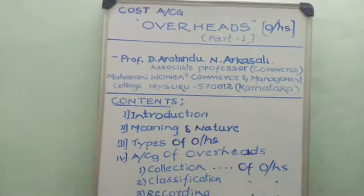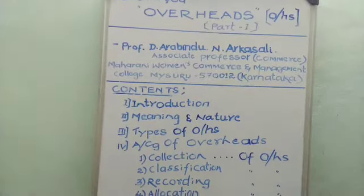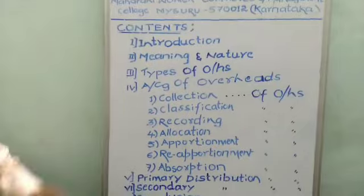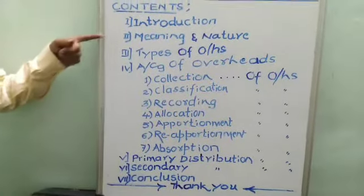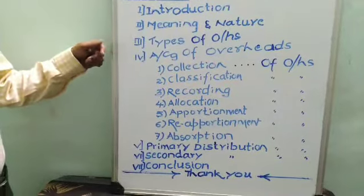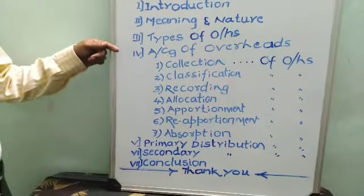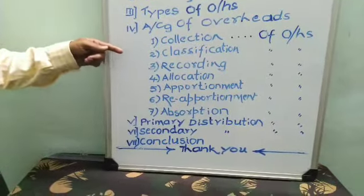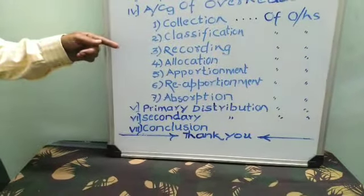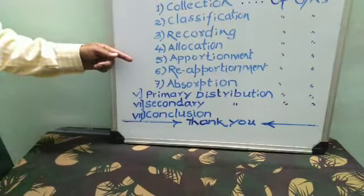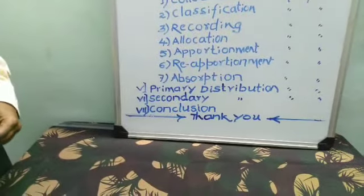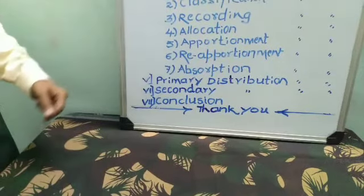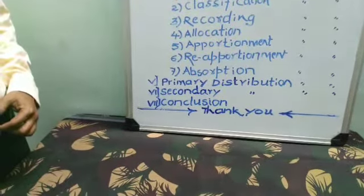Overhead includes the following topics: the introduction, meaning and nature, types of overheads, and accounting of overheads, which includes collection, classification, recording, allocation, apportionment, reapportionment, and absorption of overheads. After that, we have to study the primary distribution and secondary distribution, and then conclude the topic.